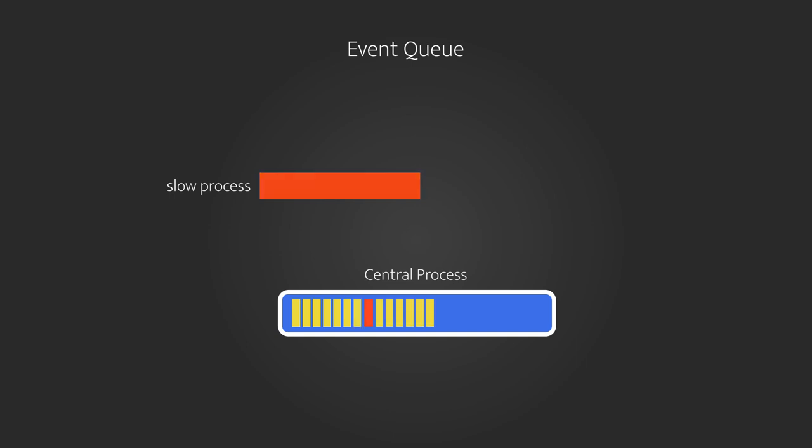Node adopts an event-driven architecture to handle non-blocking I/O. When a time-consuming process is invoked, the application doesn't wait for it to finish. Instead, the process signals when it's finished by emitting an event. This event gets added into a queue — or an event loop — and when the event is pulled from the loop and processed, the dependent functionality is invoked with any event-related data passed through it.